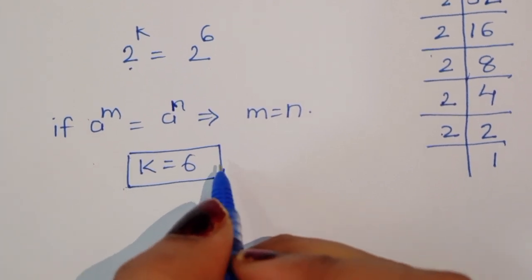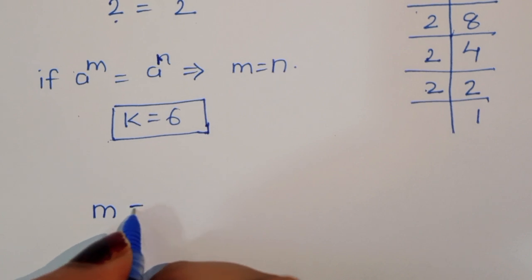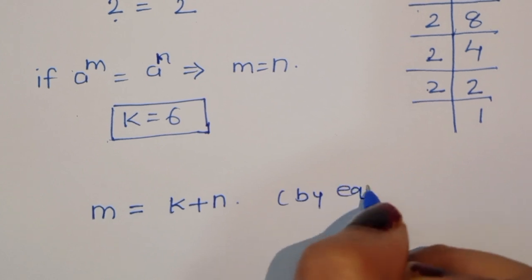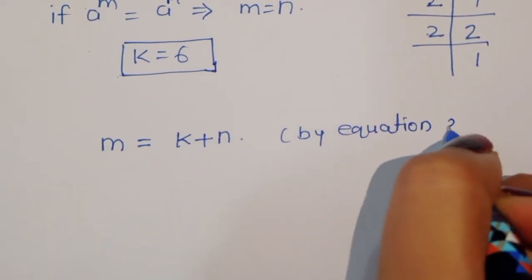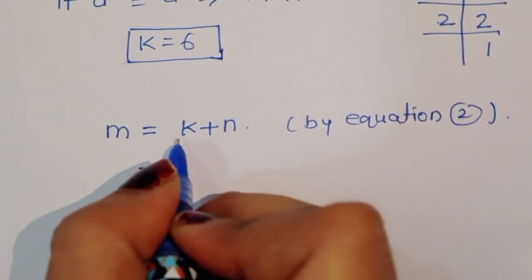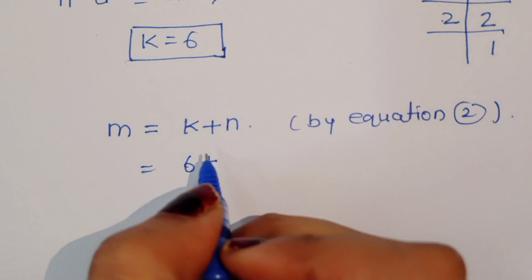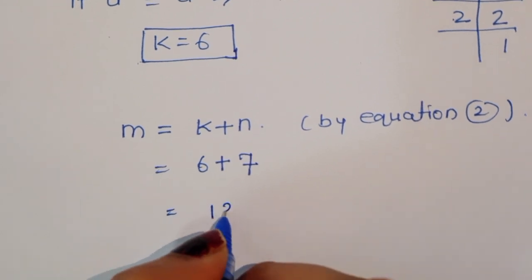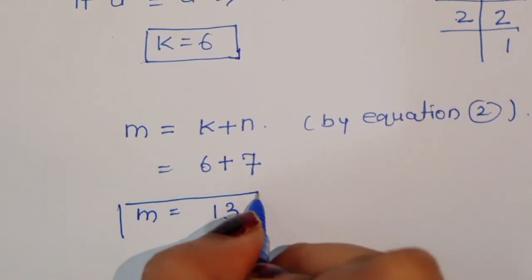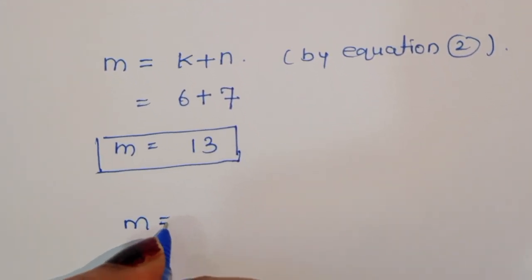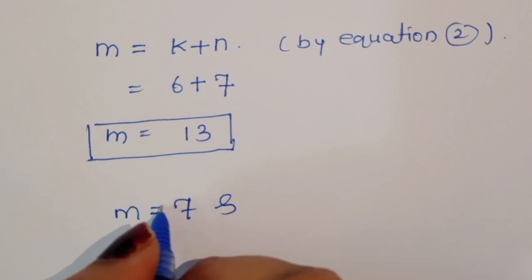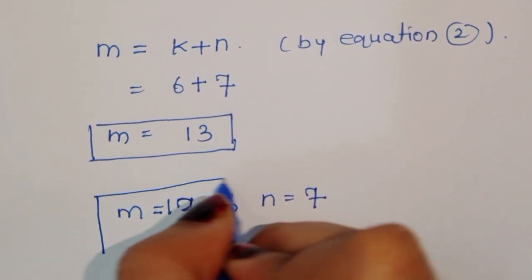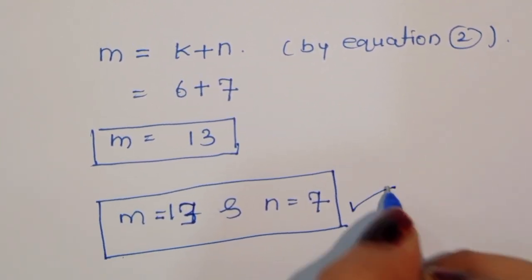Now we find the value of m. We know m equals k plus n by equation 2. Substituting k equals 6 and n equals 7, we get m equals 6 plus 7 equals 13. Therefore, the value of m is 13 and n is 7. This is the solution. Thank you.